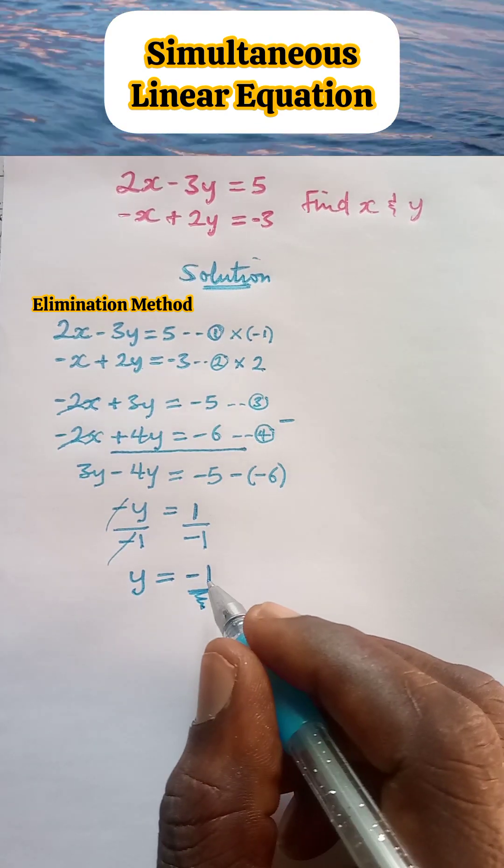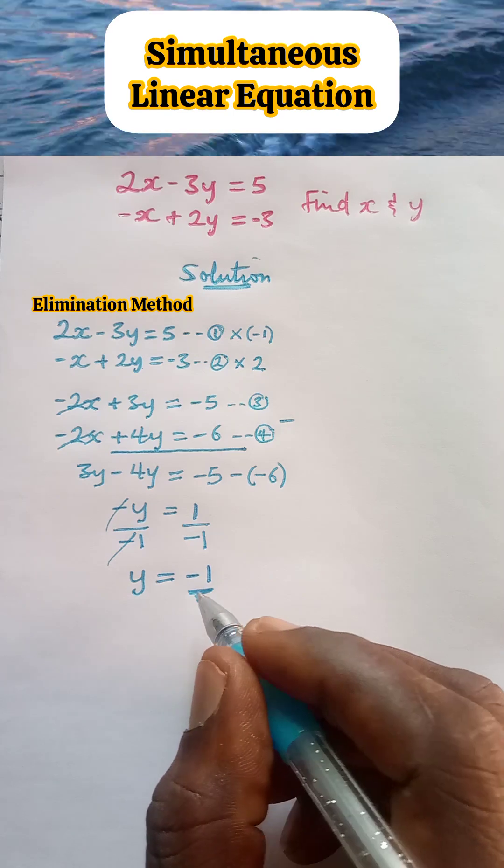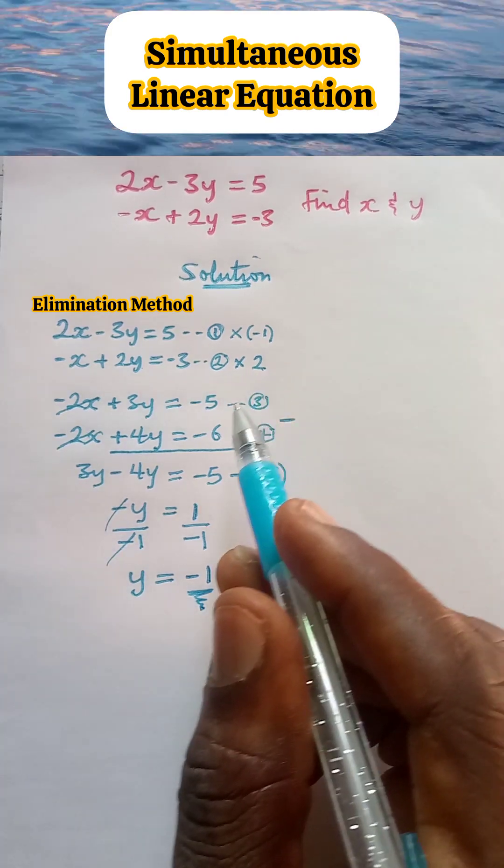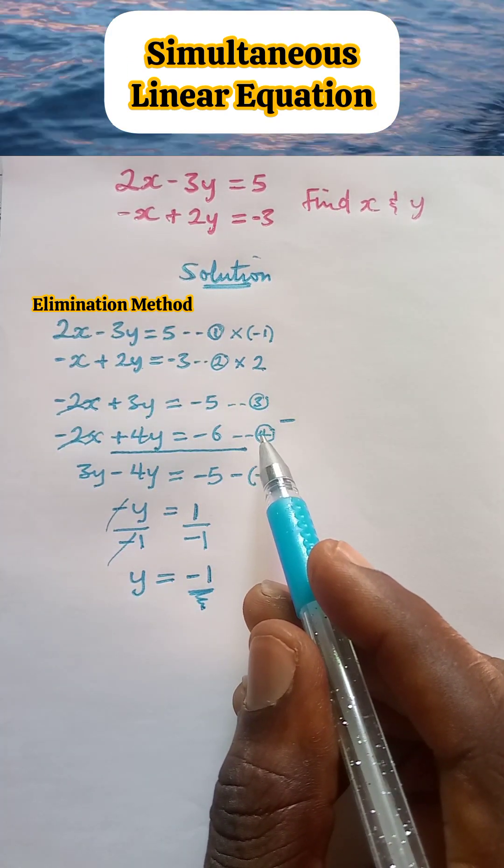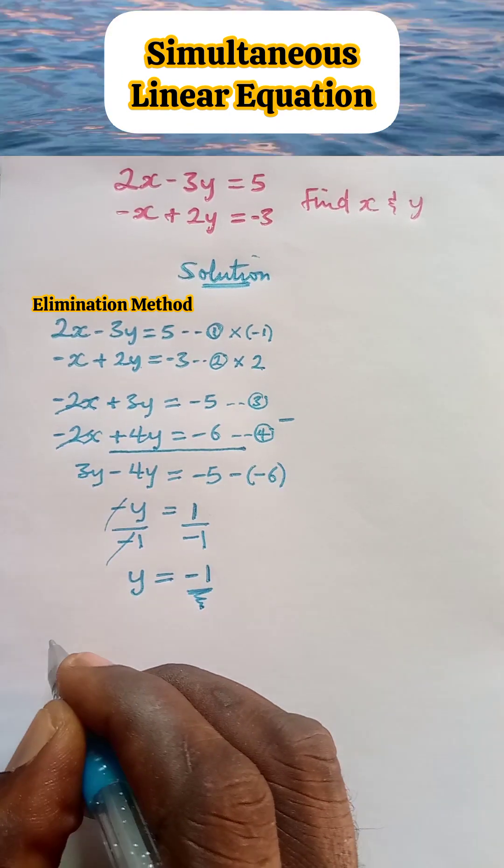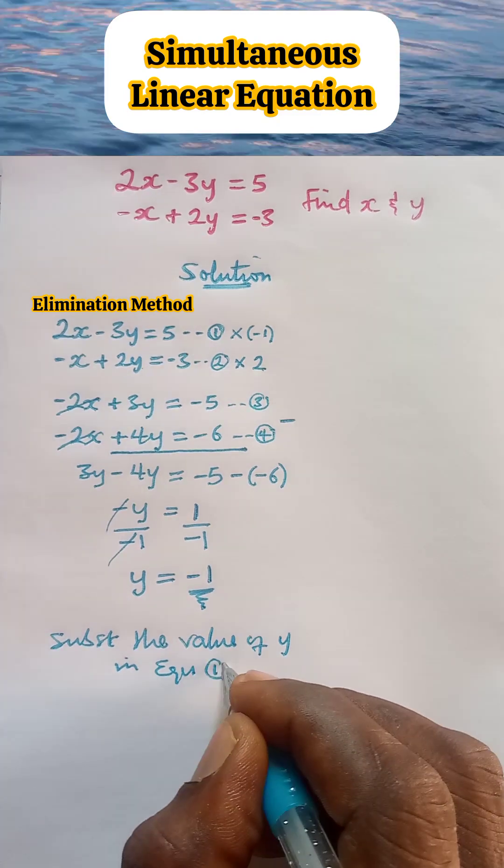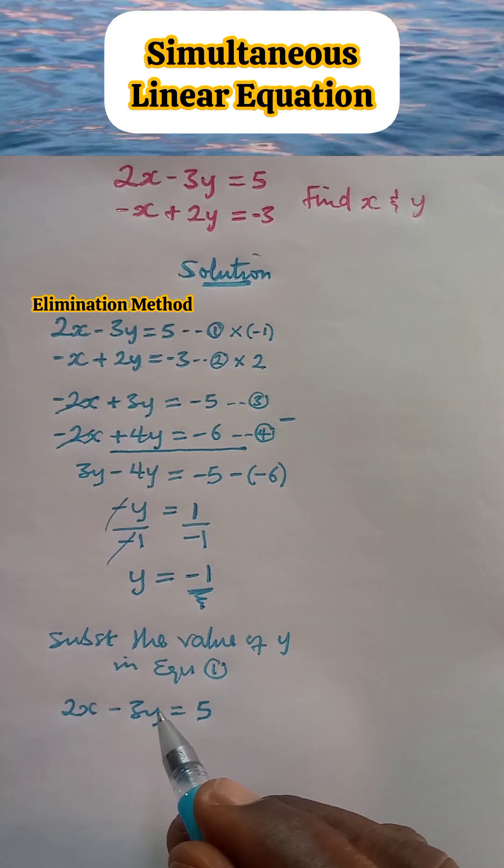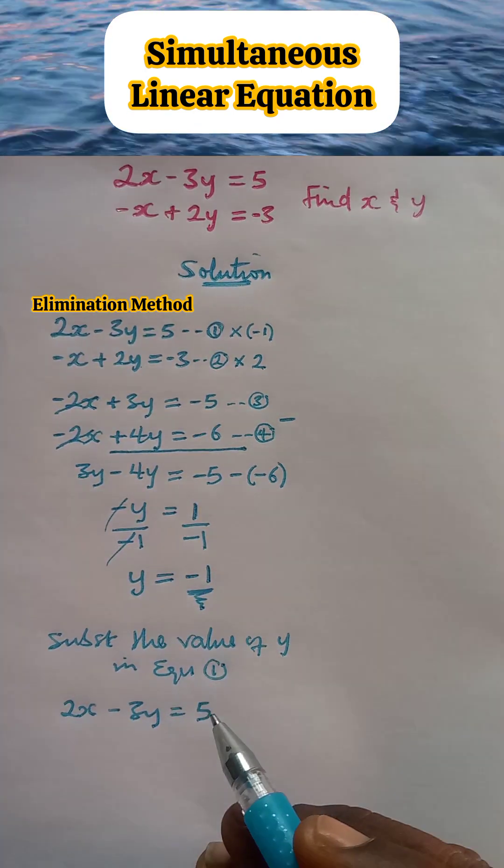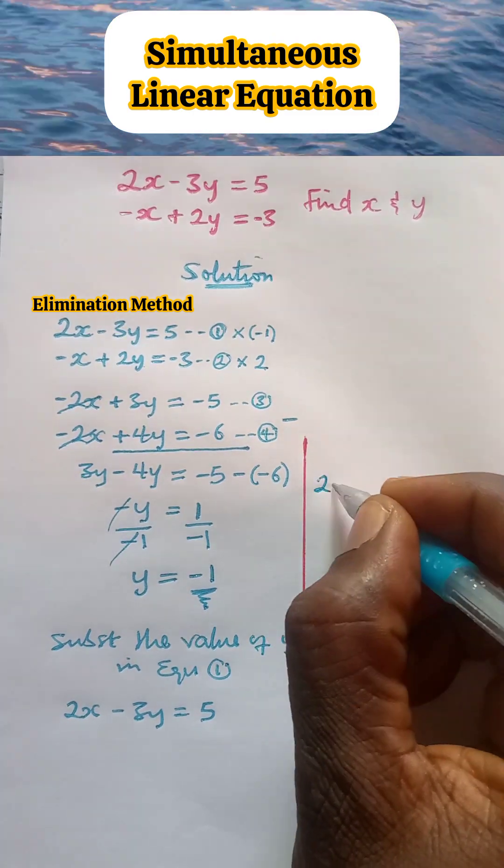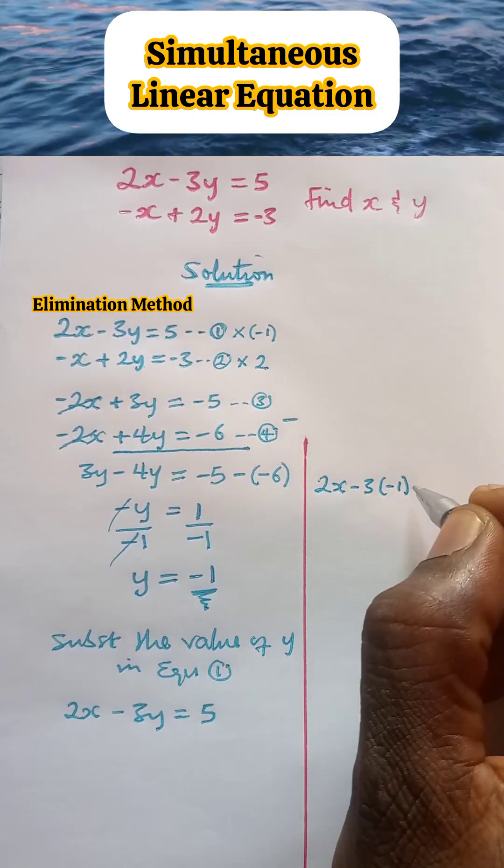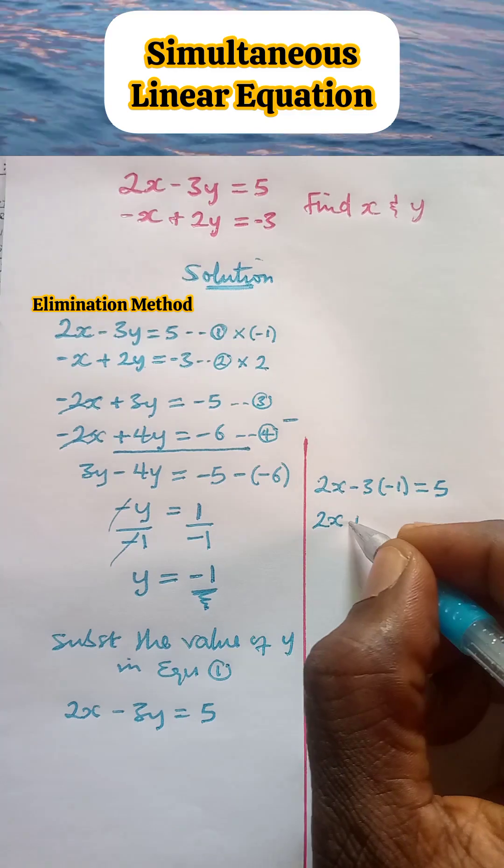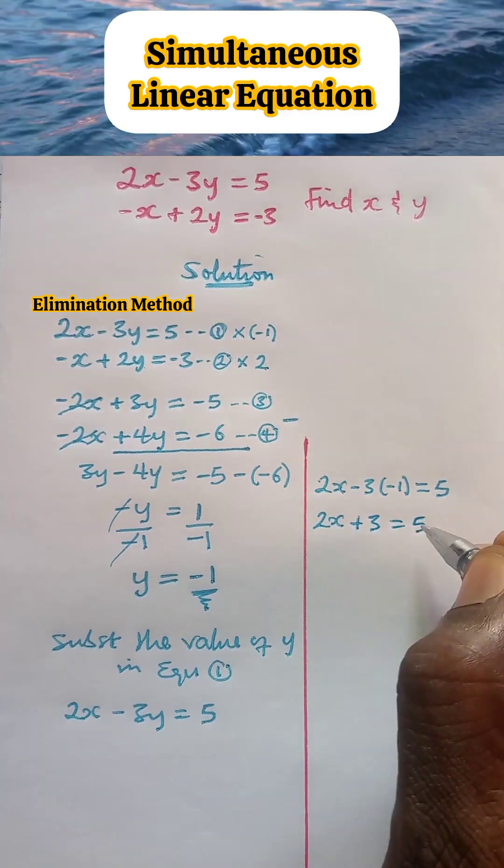Now that we have known the value of y, we are going to substitute this value in any of the equations above. We can substitute it in equation 1, equation 2, equation 3 or equation 4. Anyone we substitute it, we will get the same answer. So let's substitute in equation 1. We have the equation 1 here. Wherever we find y, we are going to put negative 1 in place of y. So that we have 2x minus 3, in place of y we put negative 1 equal to 5.